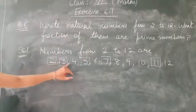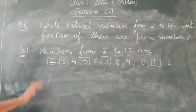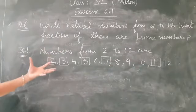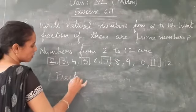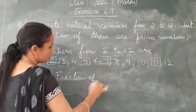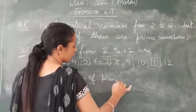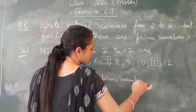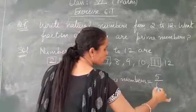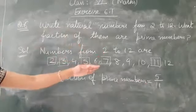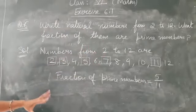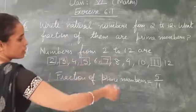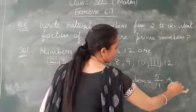So these are 1, 2, 3, 4, 5 in number. So these are 5 out of how many? So fraction of prime numbers is 5 out of total. 1 is not there. There are 11 numbers. So prime numbers fraction is 5 out of 11.